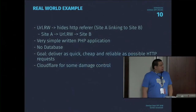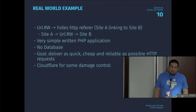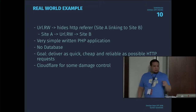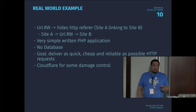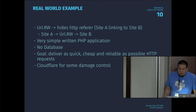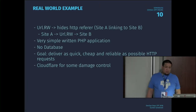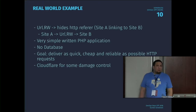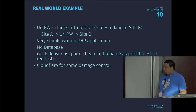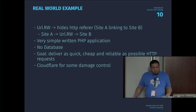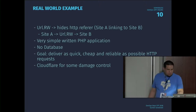How does that look in a real-world example? I created a very simplistic website called url.rw. The basic functionality is to hide the HTTP referrer. Everybody knows that HTTP referrer means site A links to site B, and site B can see where the visitors came from. By injecting my service in between, site B will not know that the visitor came from site A. It's a very simple PHP application with no database required. The goal was to deliver quickly, cheaply, and as reliably as possible. I also used Cloudflare for some damage control in case I was under attack, because I pay per page impression and didn't want to rack up bills.